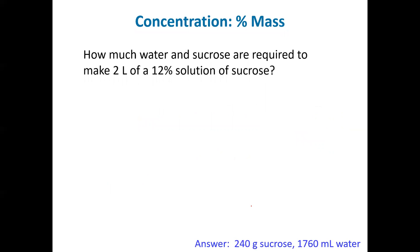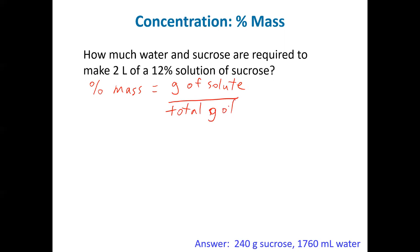What you may not have seen is percent mass. The formula for percent mass is the grams of solute divided by the total grams of solution, times 100 to make it a percent. The question asks how much water and sucrose are required to make two liters of a 12% solution of sucrose. We fill in the equation with the values we have: 12 equals the mass of the solute divided by the total solution mass times 100.